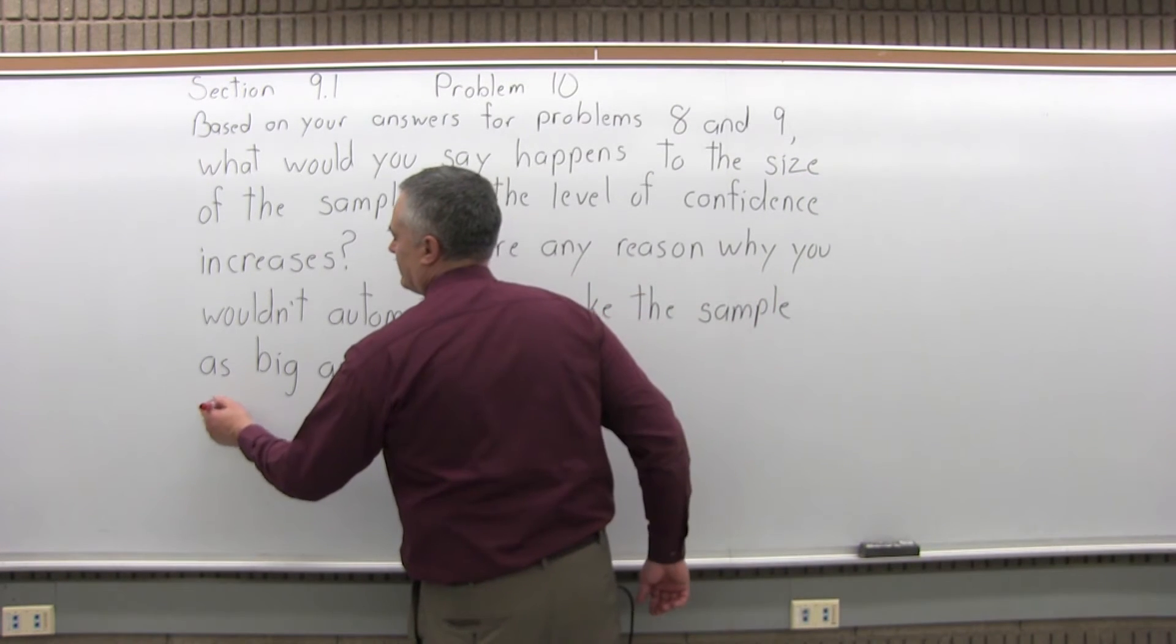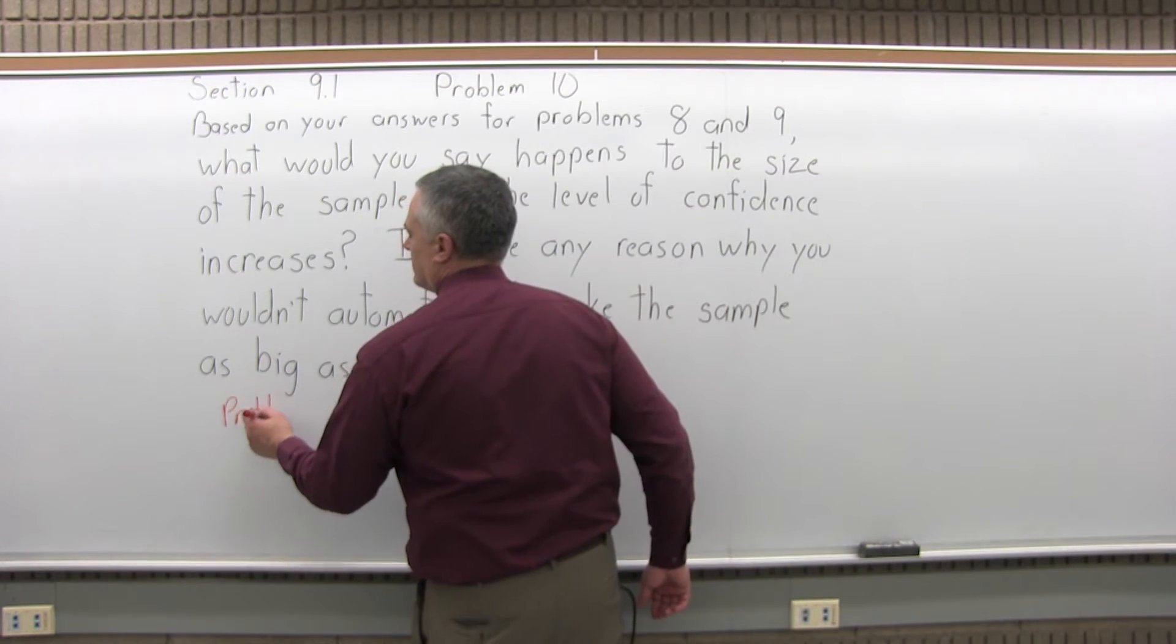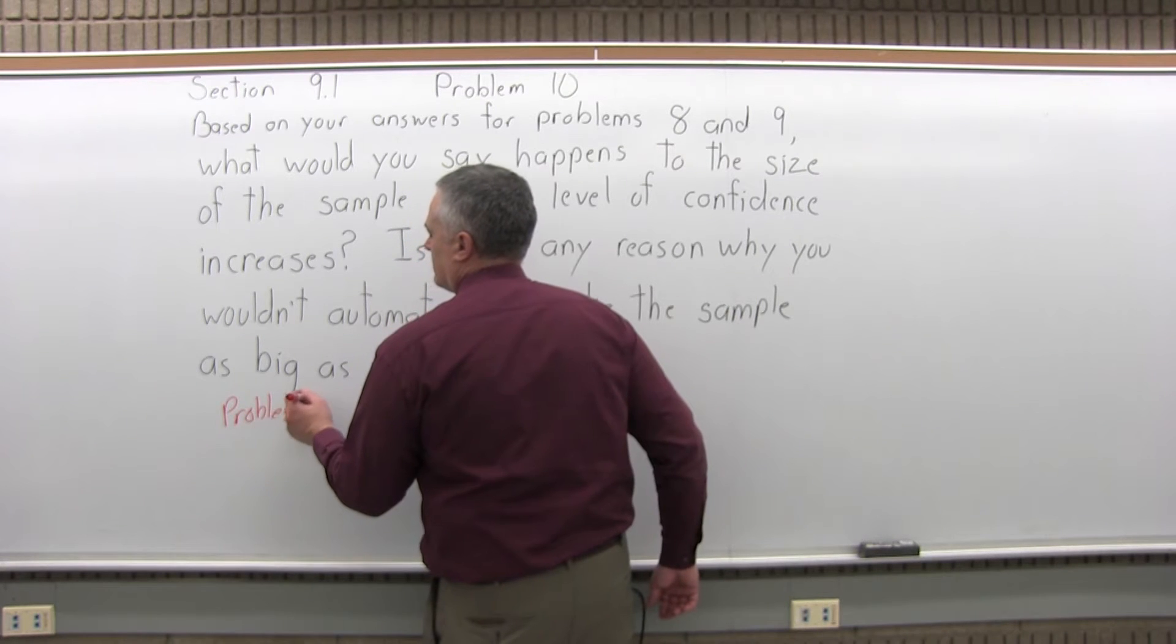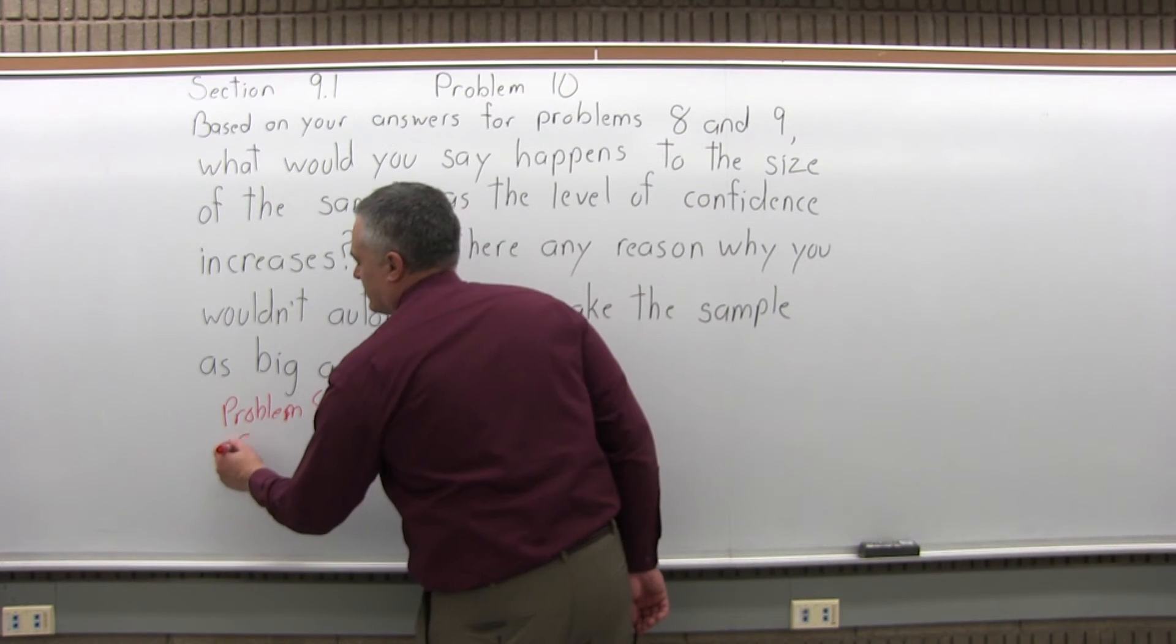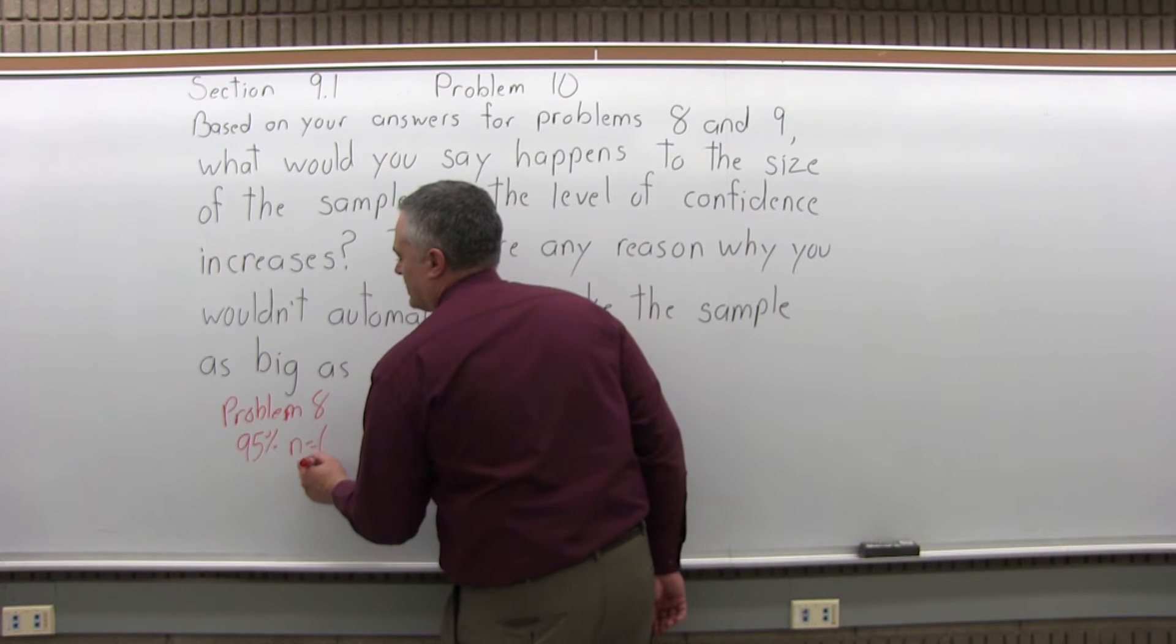If you remember, Problem 8 said that if we wanted 95% confidence, the size of our sample was 62.